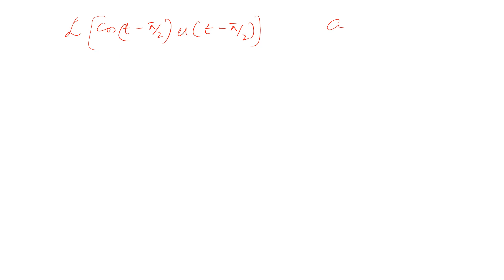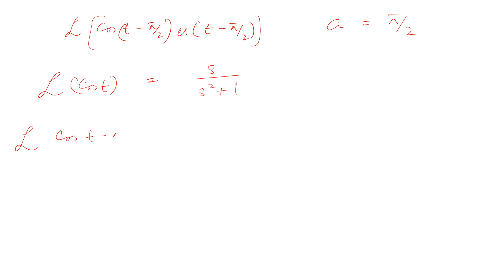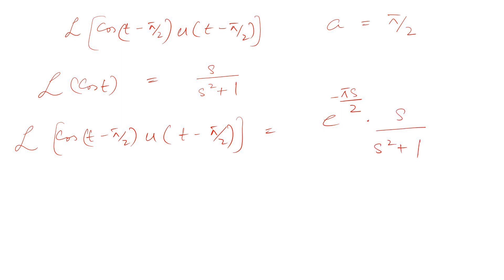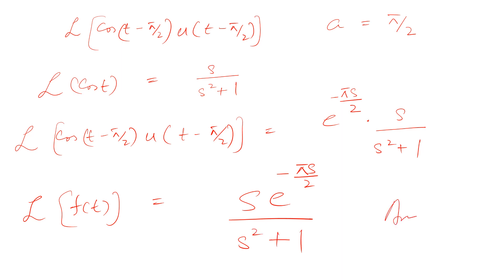In our case, a equals π/2 and the Laplace transform of cos(t) is s over (s squared plus 1). Therefore, the Laplace transform of cos(t minus π/2) times u(t minus π/2) equals e to the power negative πs/2 multiplied by s over (s squared plus 1). So the Laplace transform of the given function is s·e^(−πs/2) divided by (s² + 1). That is our answer. Thank you guys.